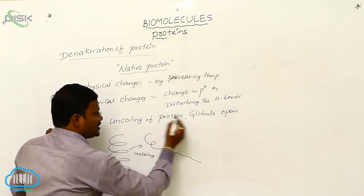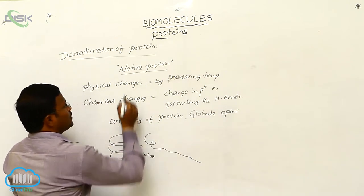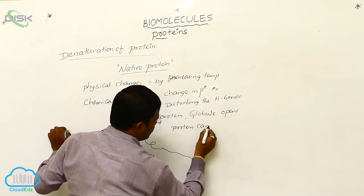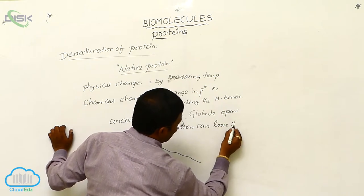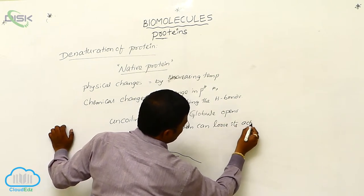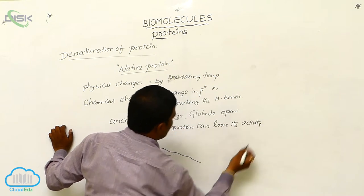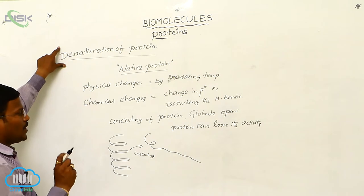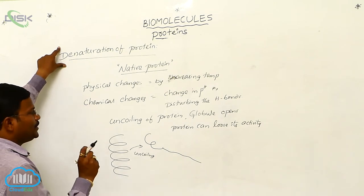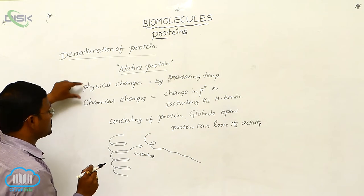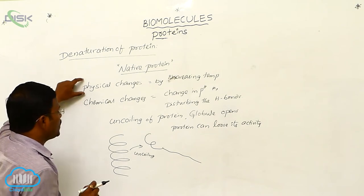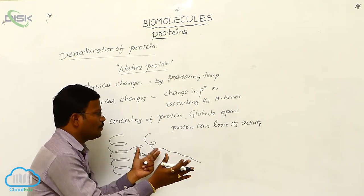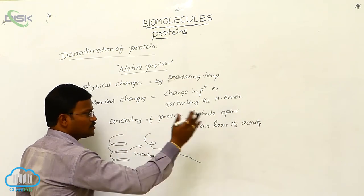By these two factors, the protein loses its activity. This phenomenon is called denaturation of protein — we disturb the native protein character by applying physical and chemical changes, causing uncoiling and globule opening, and the protein loses its activity.